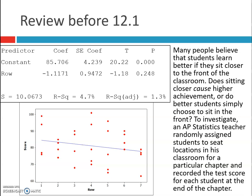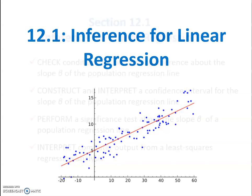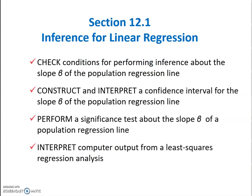This chapter is all about inference for linear regression. Here are the main goals for this first section. By the end of this section, which should be two or three videos, you're going to be able to check the conditions for performing inference about the slope β of the population regression line. We've been checking conditions for a while now, but there's going to be new ones and different ones for slope.